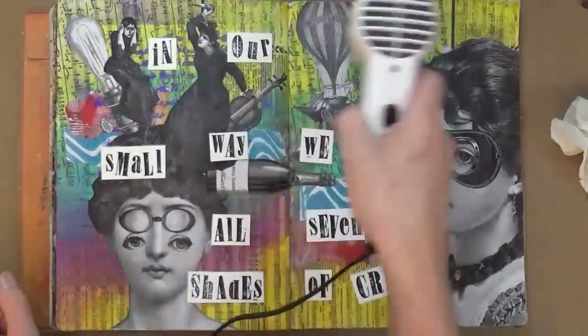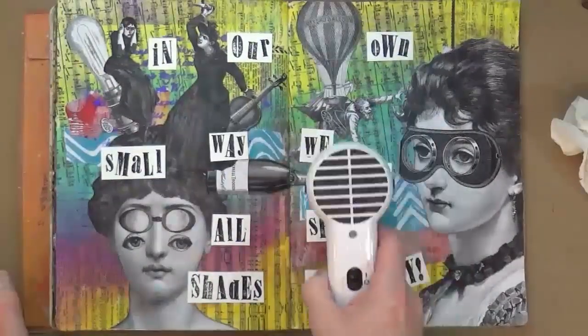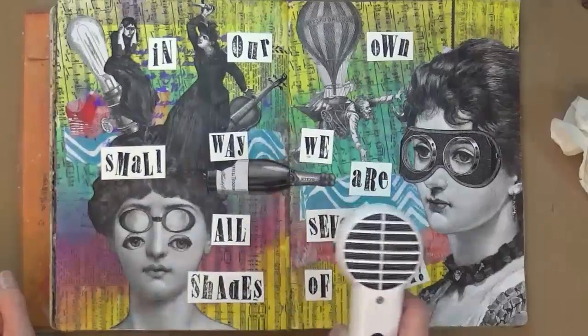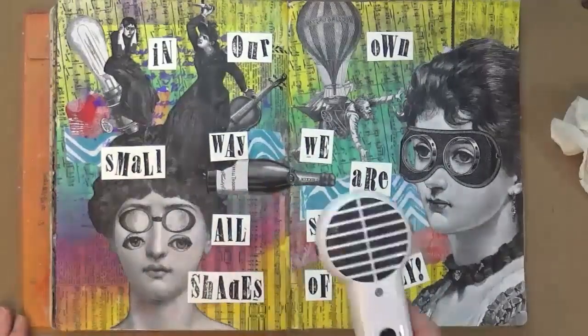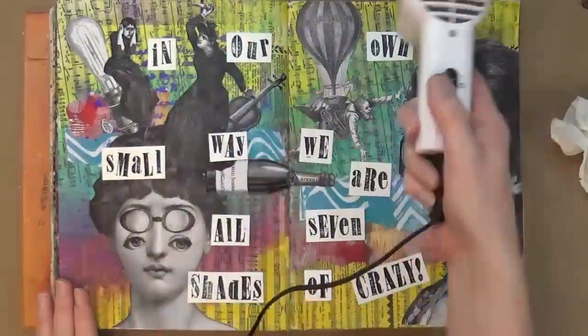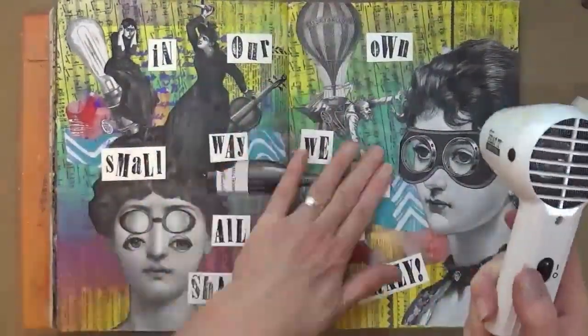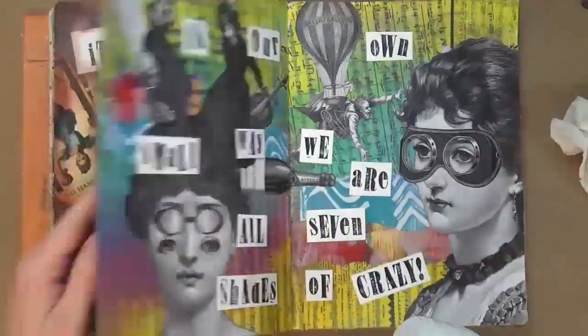Okay, so now that they're all down and stuck, I'm going to give it one big blast with the heat tool just to make sure that everything's not going to move. And then I'm going to bring in my Stabilo black all pencil and I'll go around and give them all a black border.